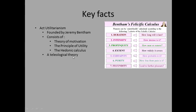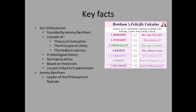Act utilitarianism is a teleological theory. It follows normative ethics and is based on hedonism, and is loosely linked to eudaimonism. We'll cover what each of these terms means in another slide.